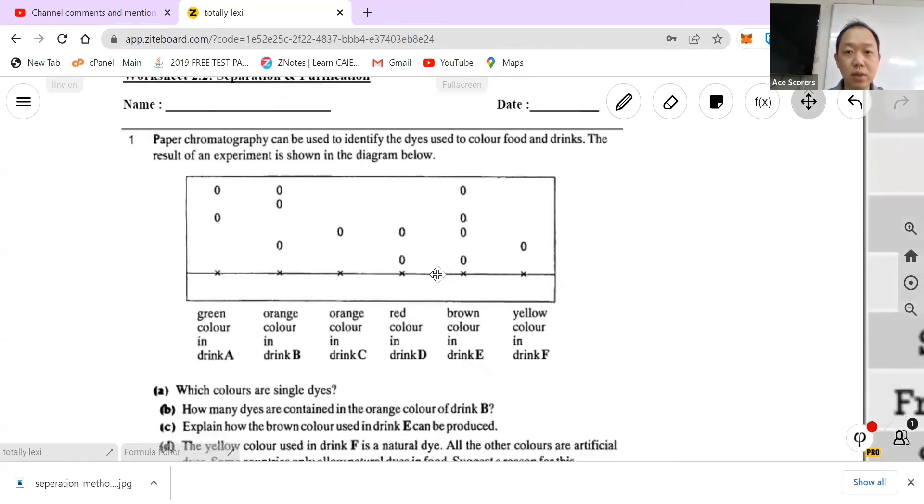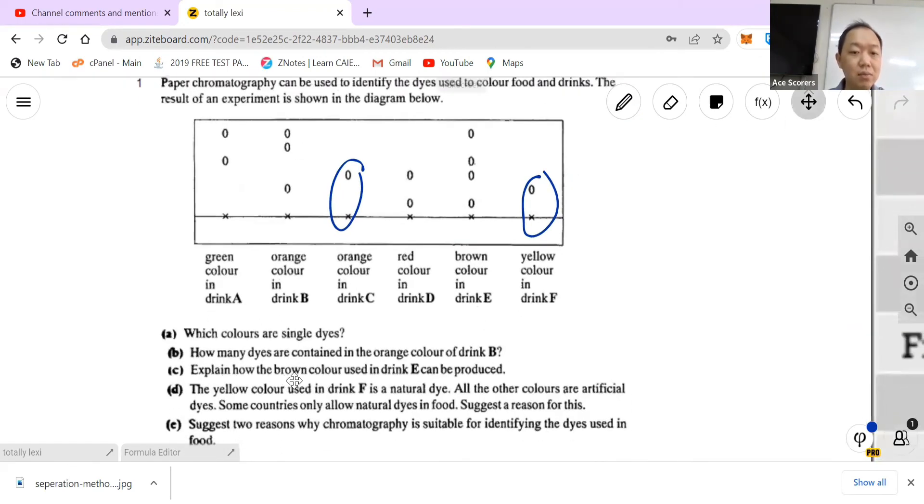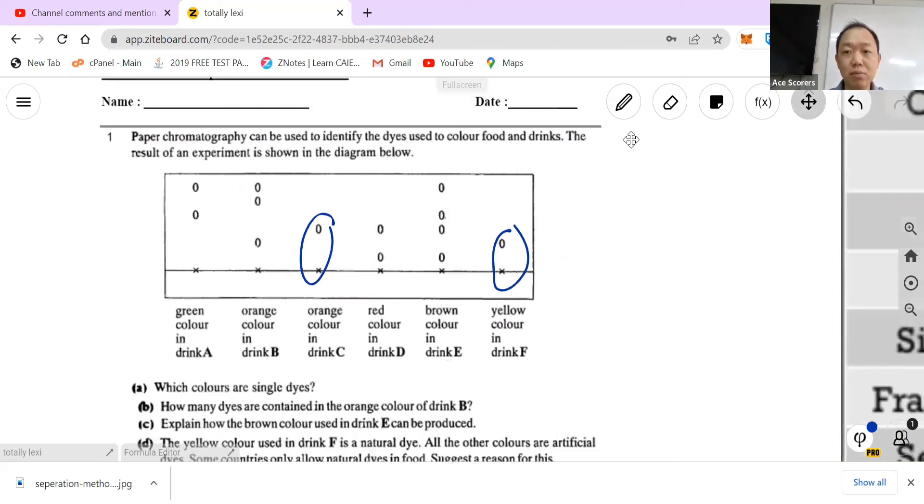So perhaps we can take a look at the question and see what is required. So you see the first one, which colors are single dyes? So this is a single dye because it's only one color and this is also a single dye. Next, how many dyes are contained in the orange color of drink B? So for drink B you can see that there are three different colors in the diagram. Next, how the brown color used in drink E can be produced?